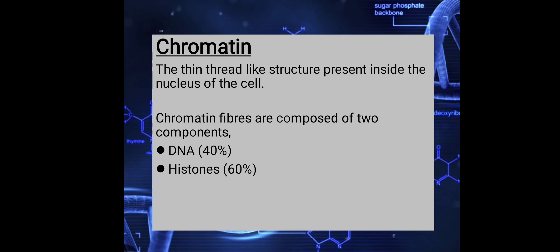Chromatin fibers are thread-like structures present inside the nucleus of the cell. This chromatin fiber is made of two components: one is DNA and the other one is histones.